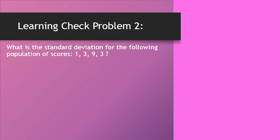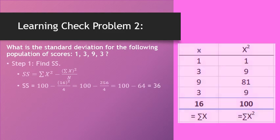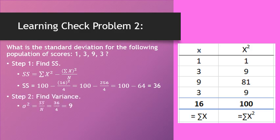Problem 2: what's the standard deviation for this population of scores? Pause the video and see if you can do the work. Step 1, again two columns — x and x squared — sum them both up, and fill into the sum of squares equation. You end up with the big number minus the small number squared over 4. Plug those numbers in and you come up with 36 for your sum of squares. Next, find your variance: SS over n is 36 over 4, which gives you 9. Finally, find the standard deviation: square root of 9 is 3.